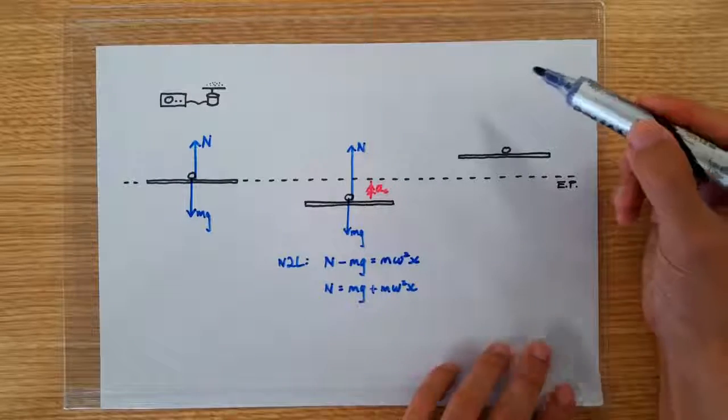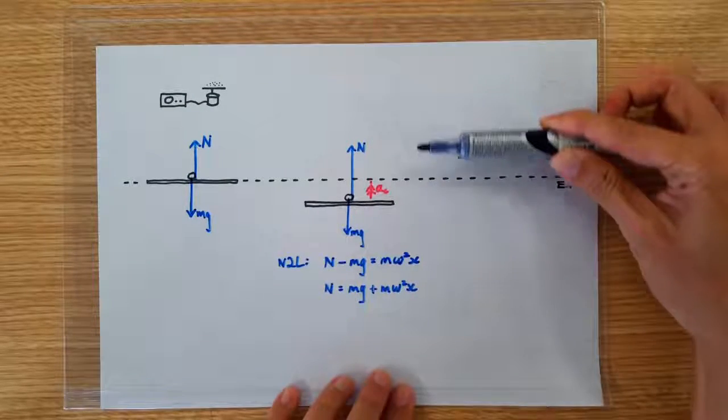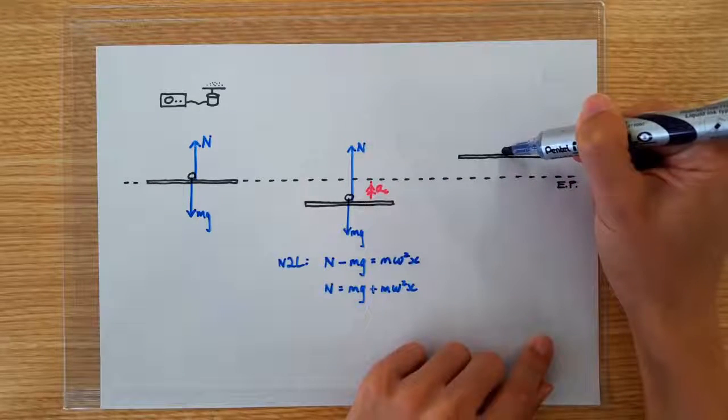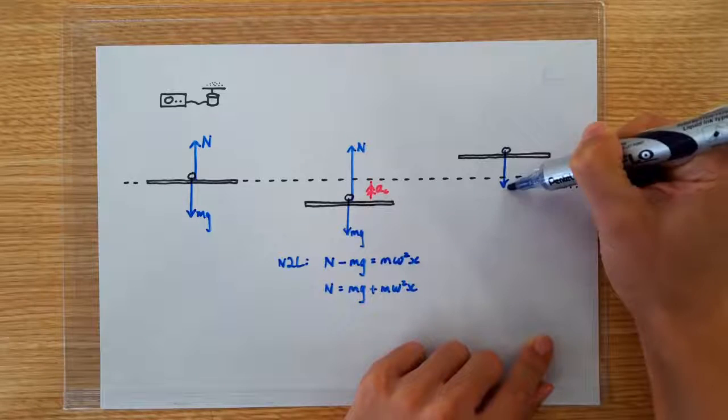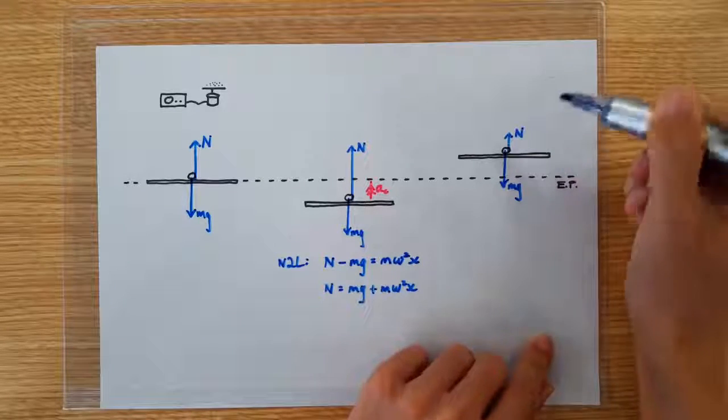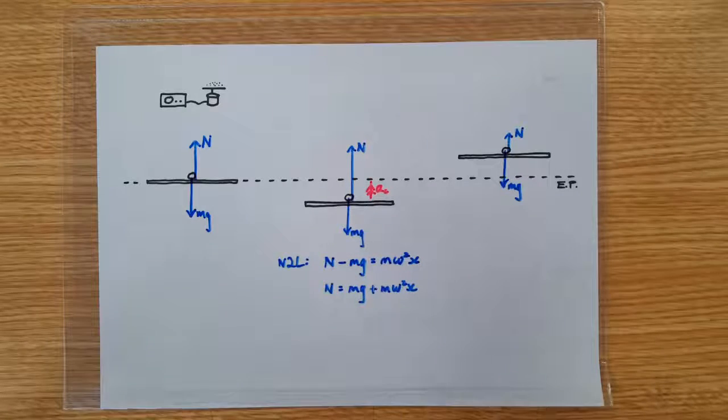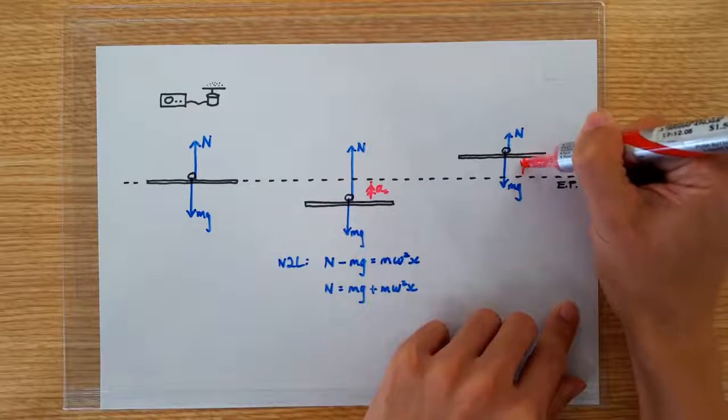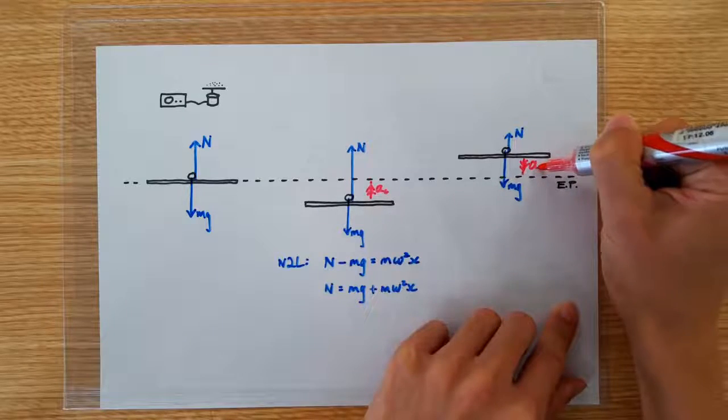Let's move on to when the plate is oscillating above the equilibrium position. When it's above, we know that the normal contact force is going to be smaller than the weight. Reason being, when the displacement is positive, the acceleration has got to be negative downward.